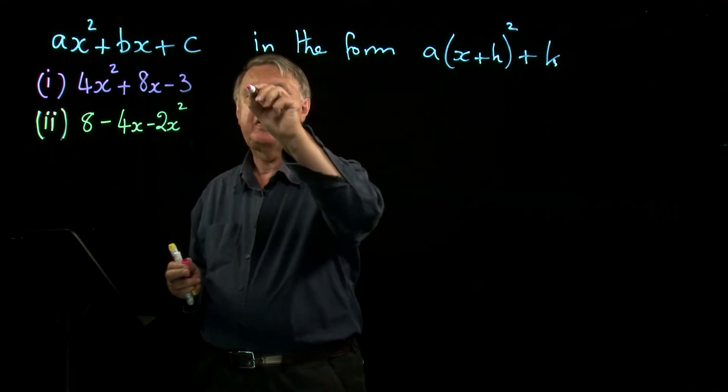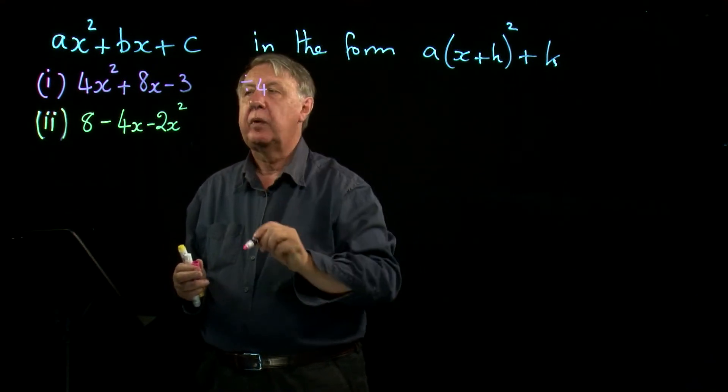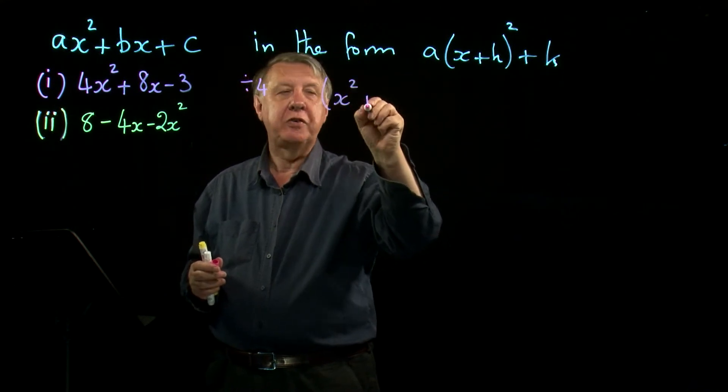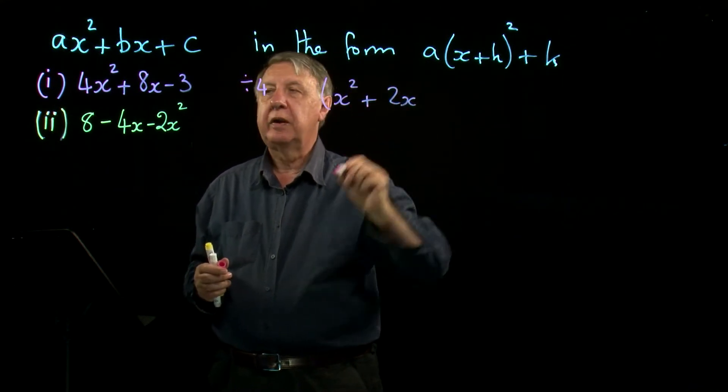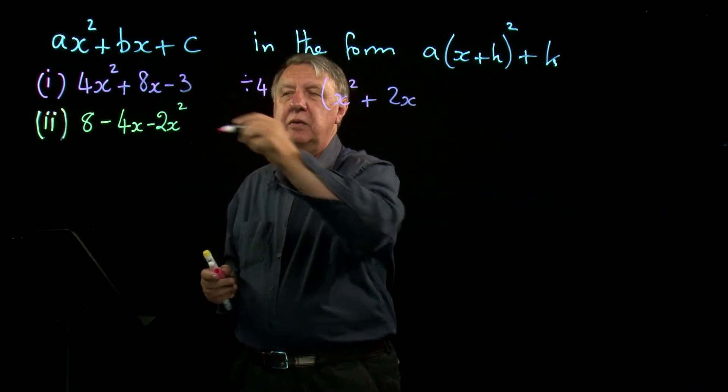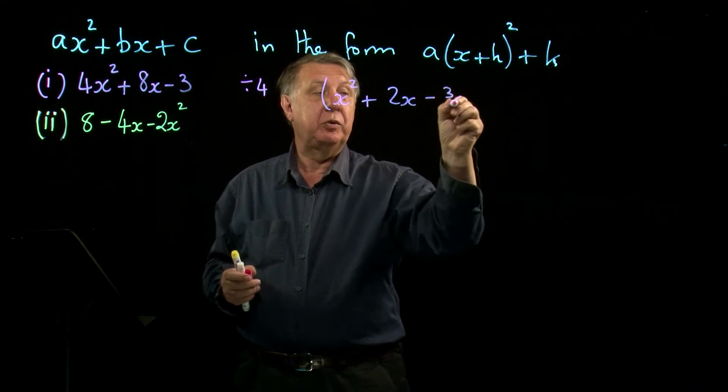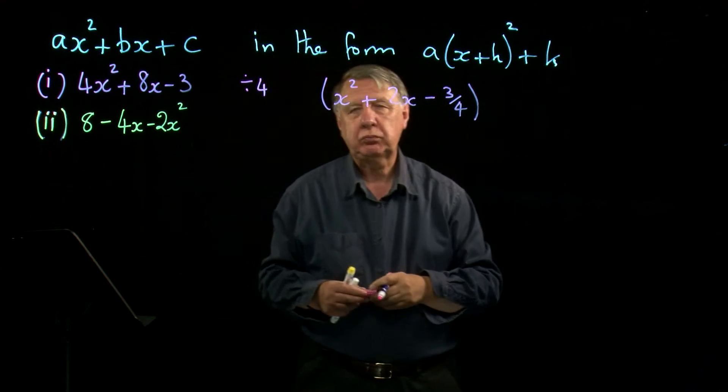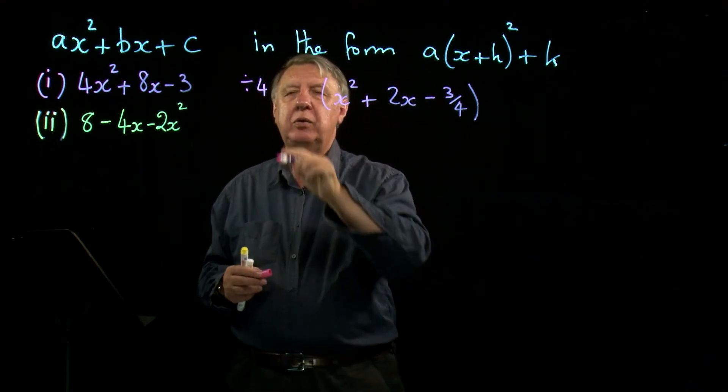If I divide everything by four, then I get x squared plus 2x. Now people that are worried about fractions always panic at this point. Divide by four just means put it over four.